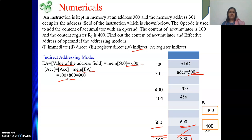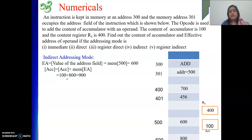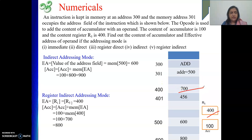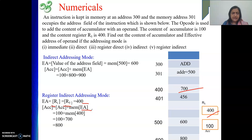The last one is register indirect addressing mode. In register indirect mode, the register contains the effective address. So EA equals the content of register R5, which is 400. At address 400 we get 700, which is the operand. Adding 700 to the accumulator value 100 gives a result of 800. This completes all five addressing modes for the second numerical.